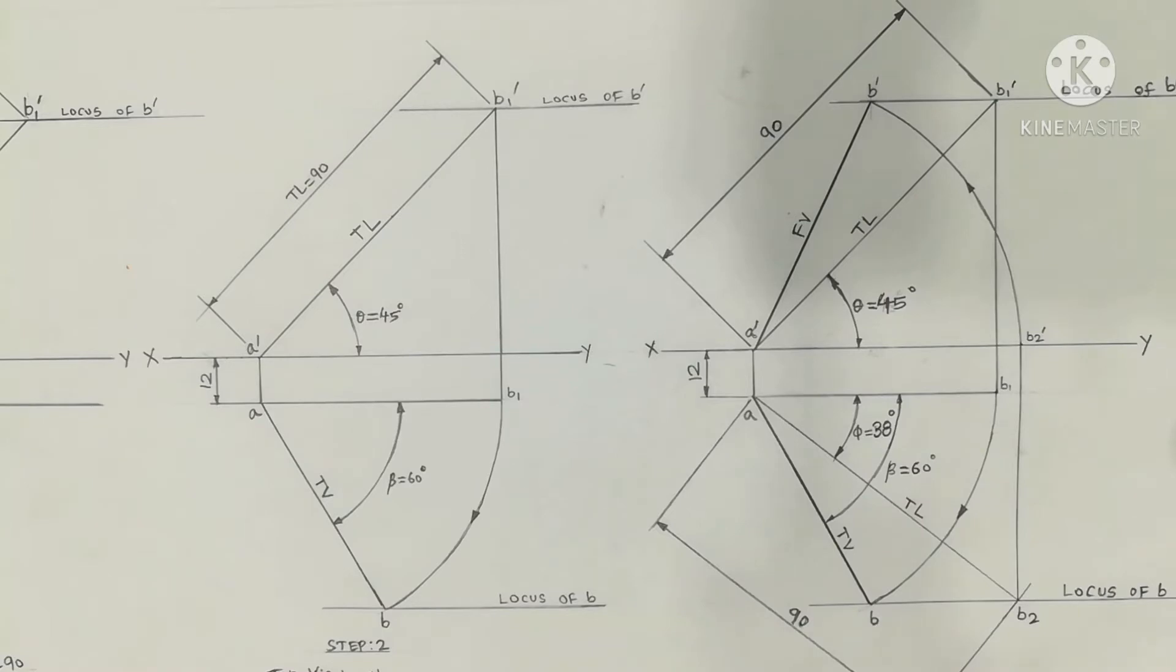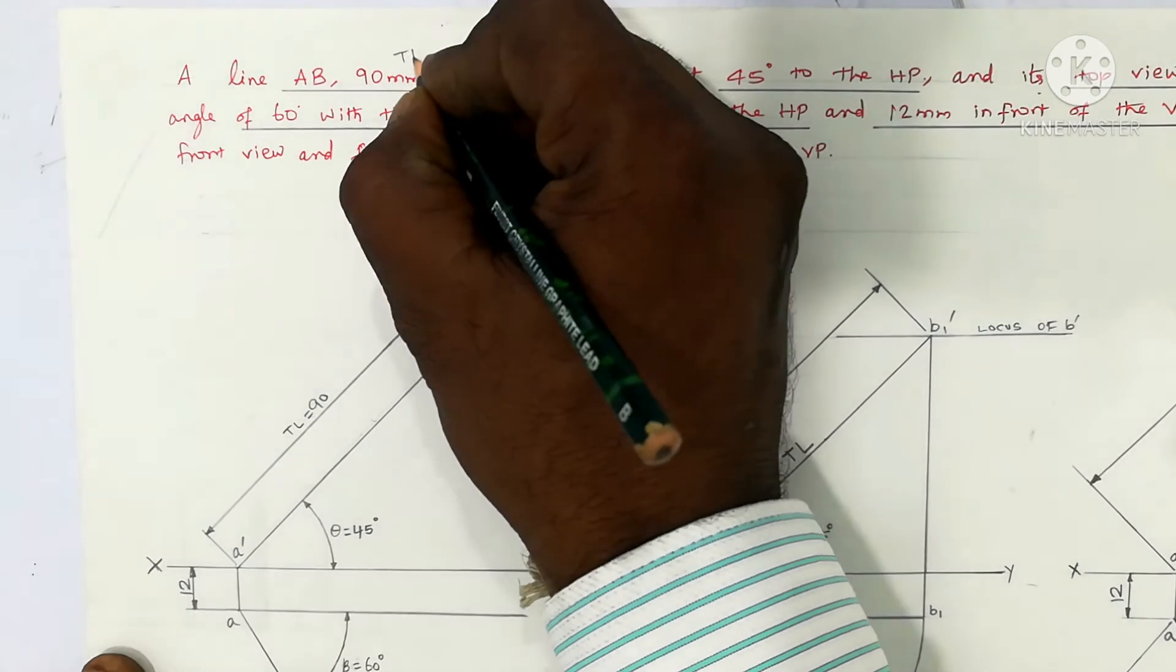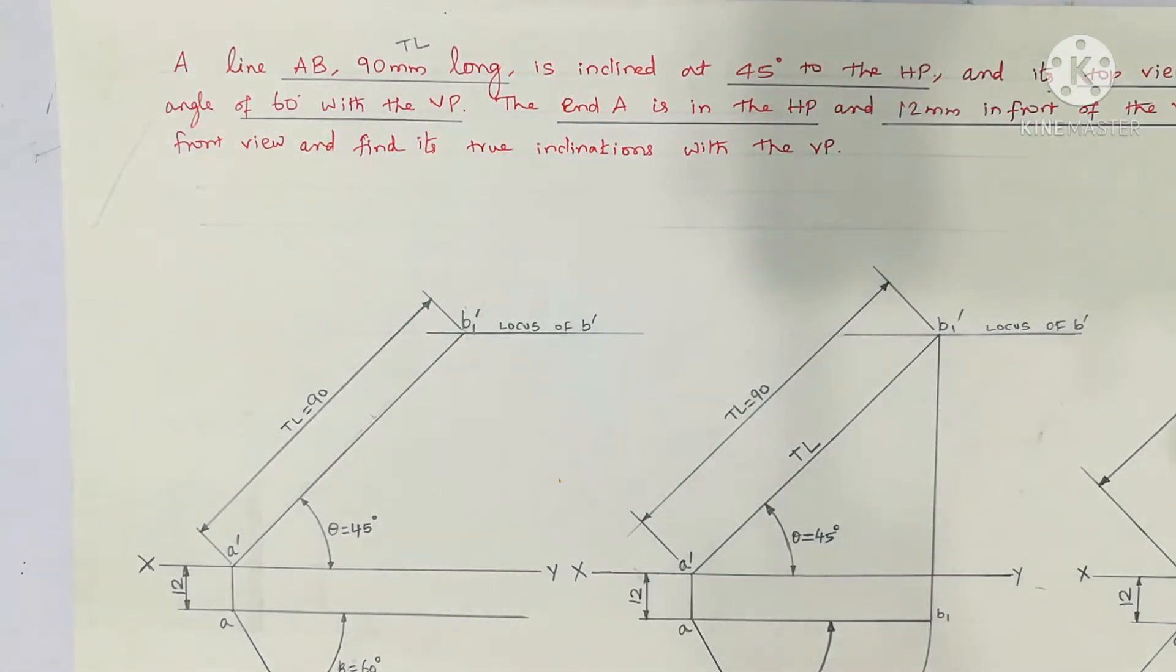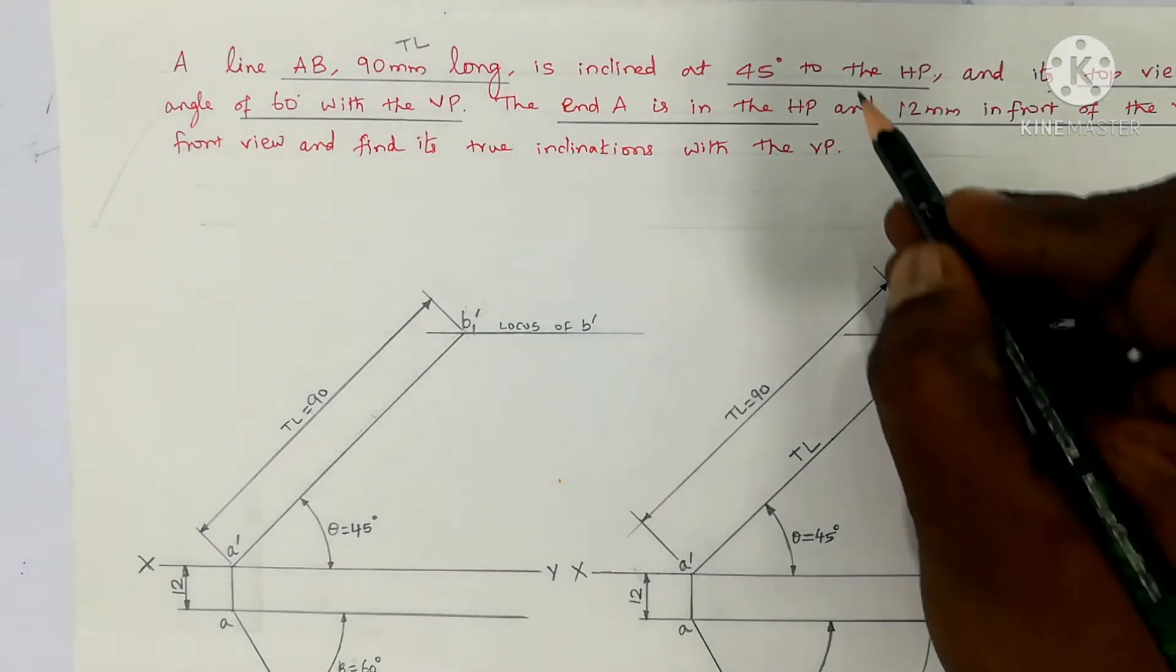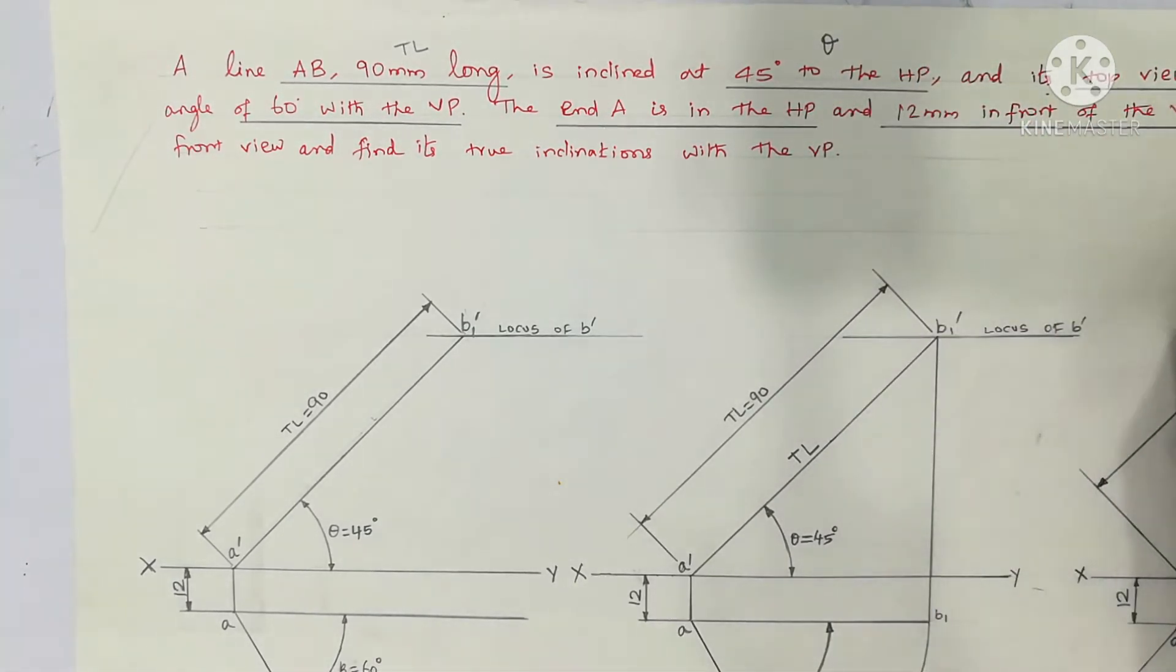So true length is 90mm long. TL is short for true length of the line. Inclined 45 degrees to HP. This is theta, and top view measures 60 degrees.